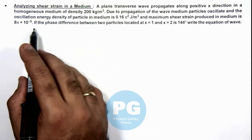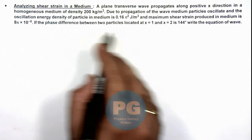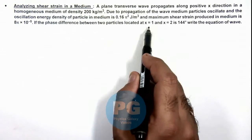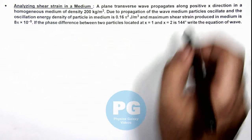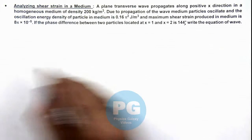We are also given that if the phase difference between two particles, between x equal to 1 and x equal to 2, is 144 degrees, we are required to write the equation of wave.